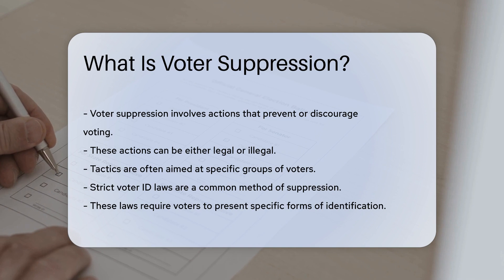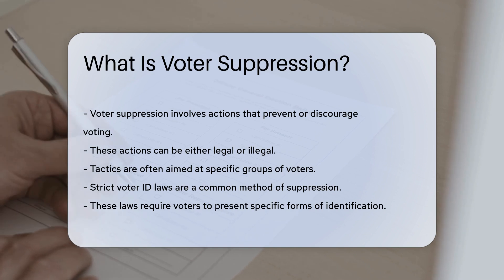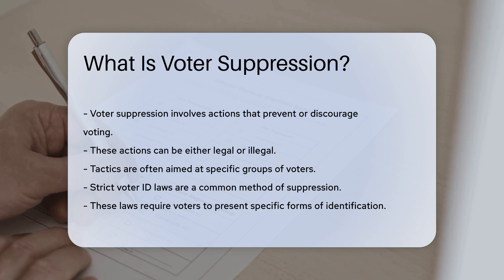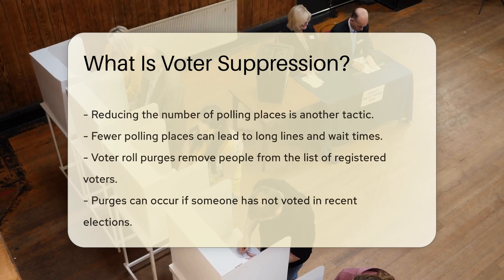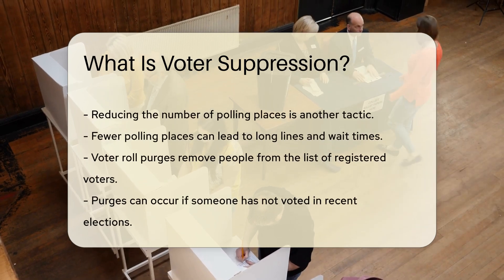Common tactics include strict voter ID laws, which require voters to present specific forms of identification. Another tactic is reducing the number of polling places, which can lead to long lines and wait times.